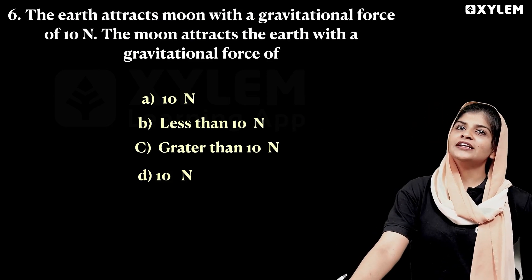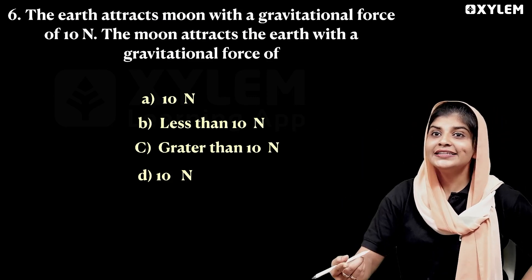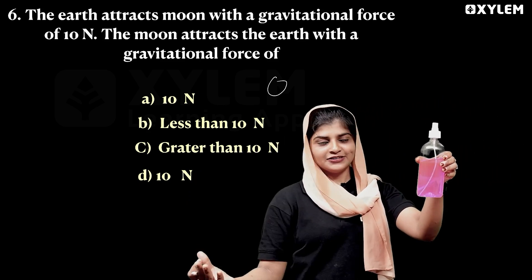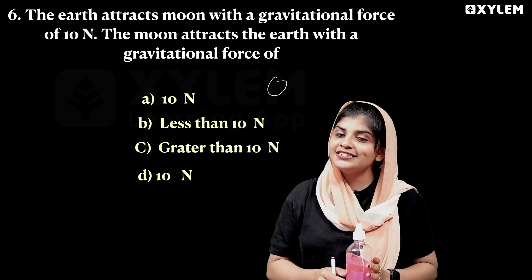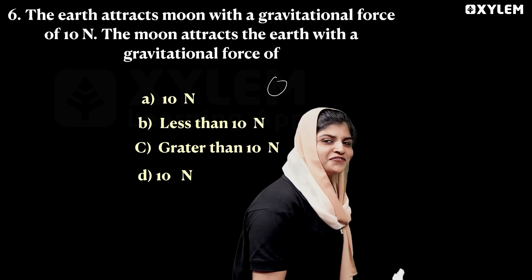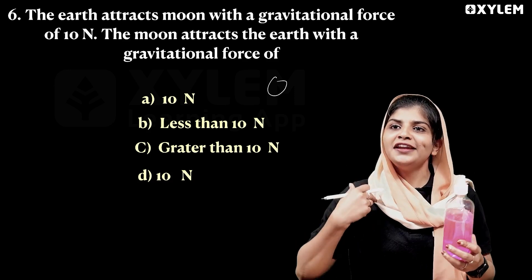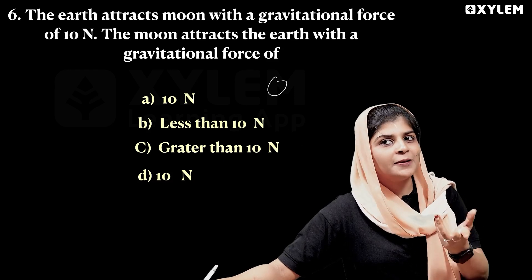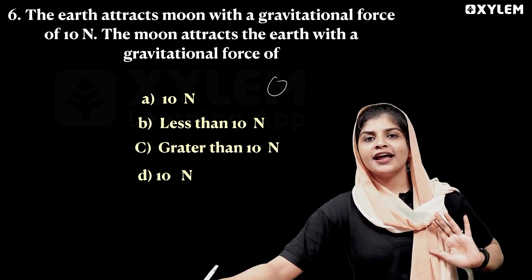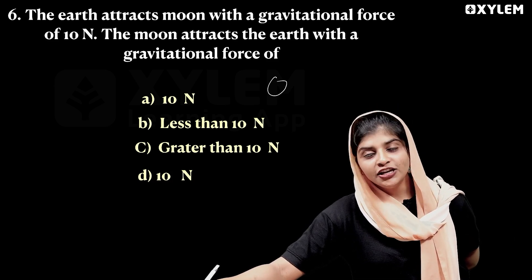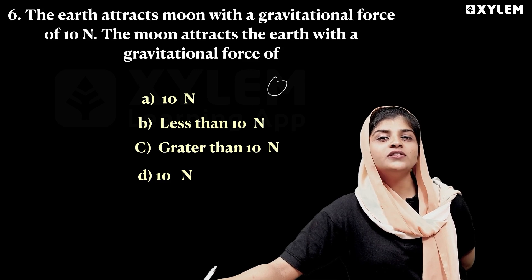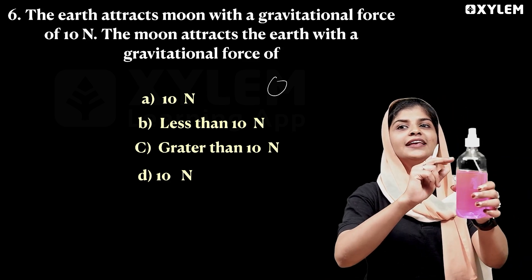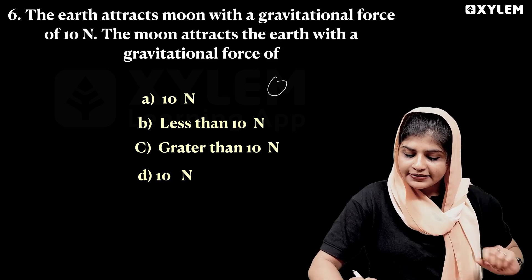Next question: the earth attracts the moon with a gravitational force of 10N. Then the moon attracts the earth with a gravitational force of? Every object is attracted to the earth — they are attracted to each other with similar forces. So the answer is also 10N.